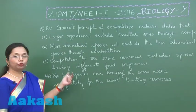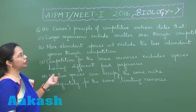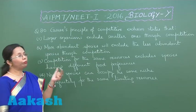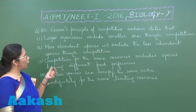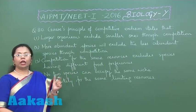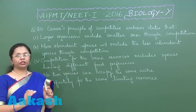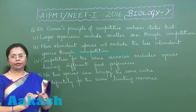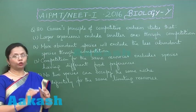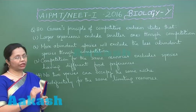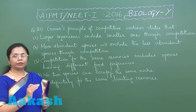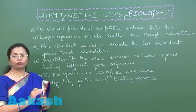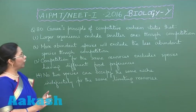In this question we have to choose the statement which correctly shows the Gauss competitive exclusion principle. Gauss's principle states that no two species can occupy the same niche. Niche is the status and function of an organism in an ecosystem. In a habitat they have a certain status, and if they are occupying the same niche there would be too much competition and both of them cannot survive successfully.